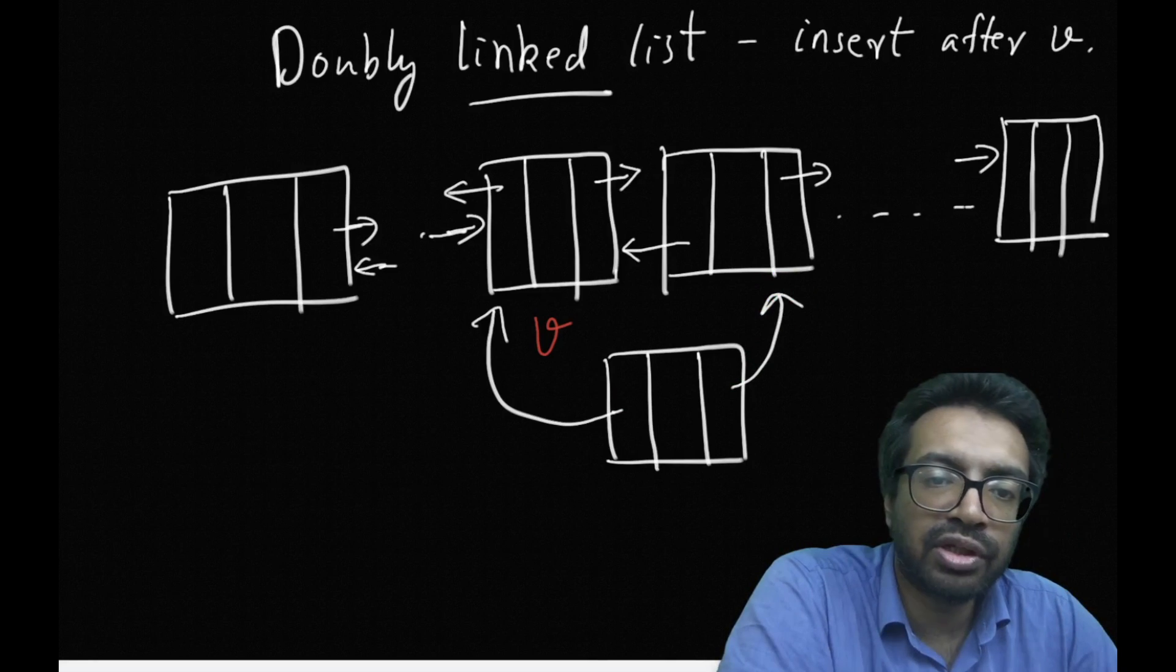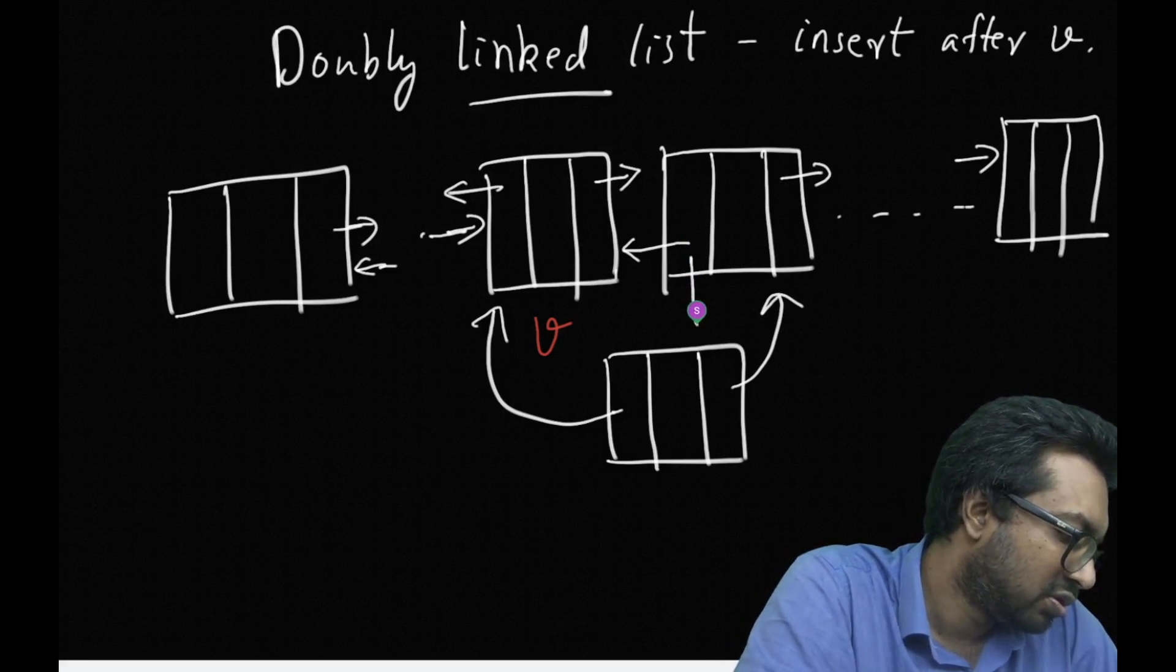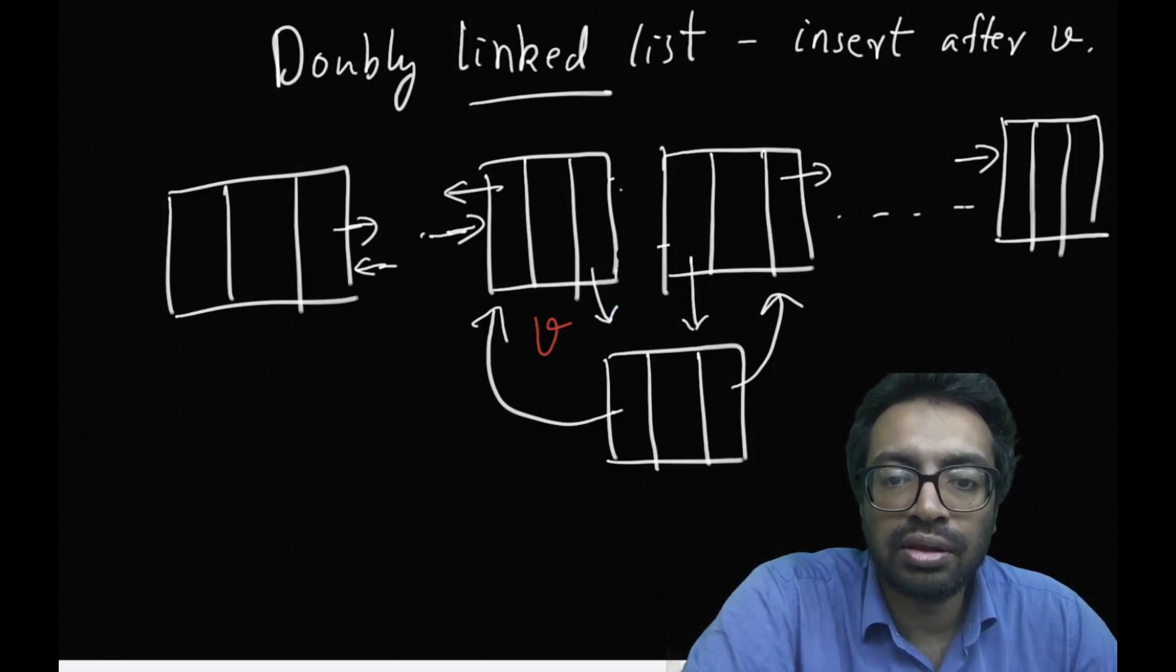Now the prev of the node after B is going to point to this new node and the next of B is going to point to this new node. This will ensure we have a doubly linked list.